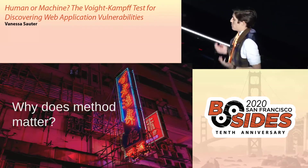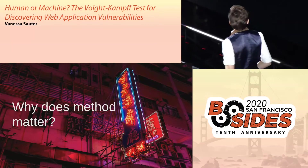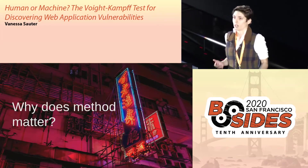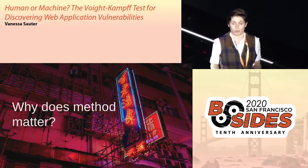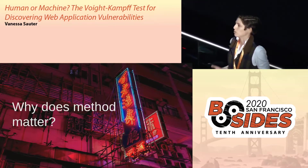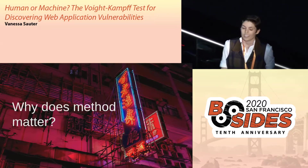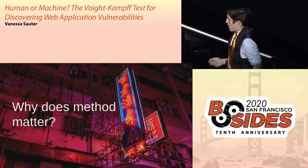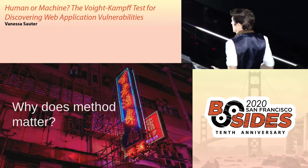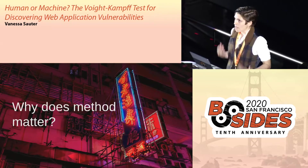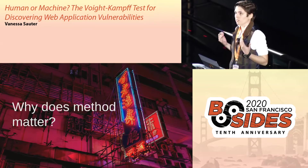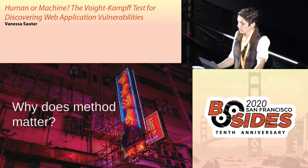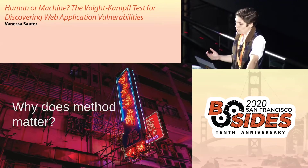Why does method matter? In other words, who the hell cares if a machine or human finds the vulnerabilities? A vuln is a vuln, right? Does it really matter in the end, the method through which a vulnerability is reported?